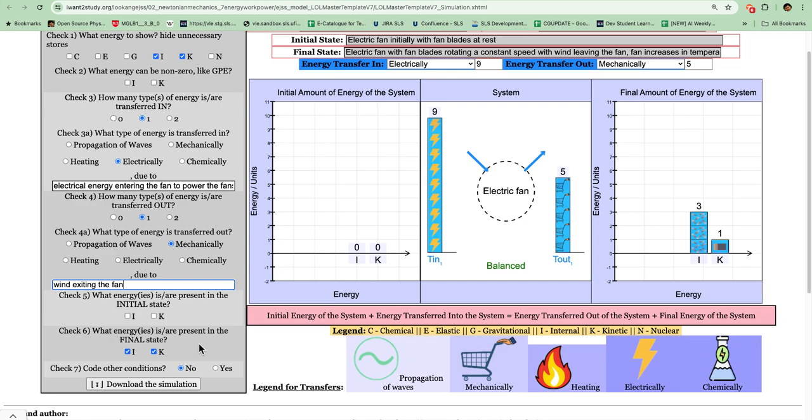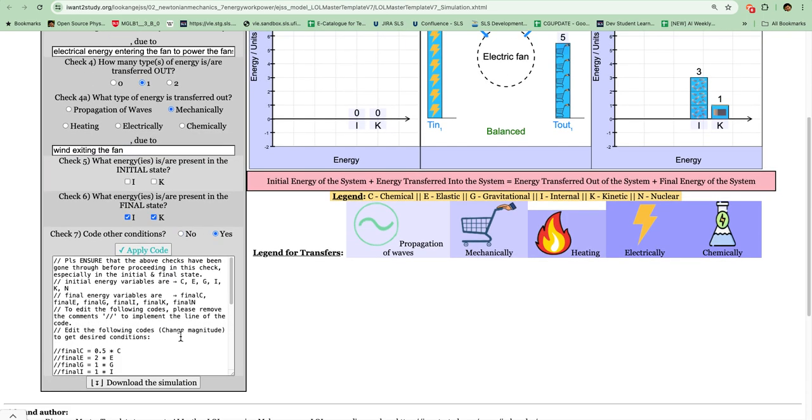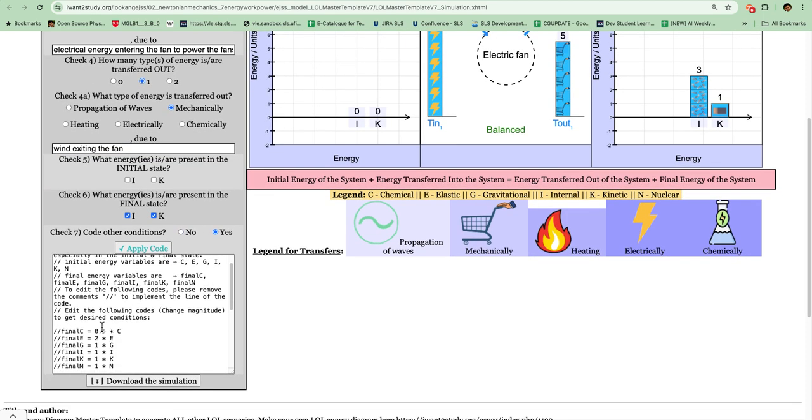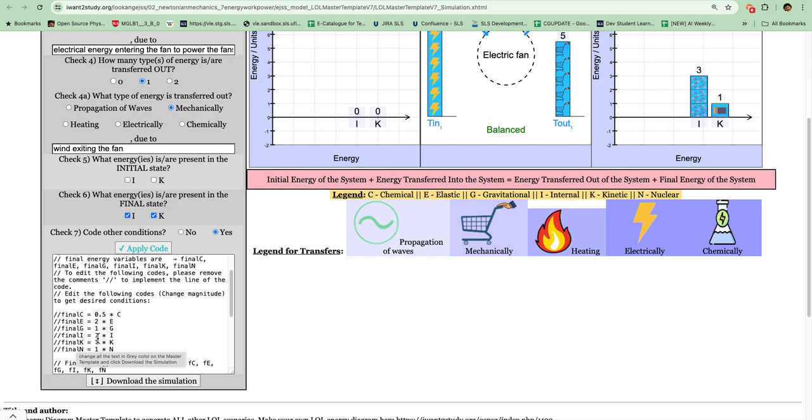Now this is the more complicated one which is not recommended to be used, but if let's say you need to have more power then you can actually come here. For example, if you want internal store, let's say you have a scenario where the internal store of the final is half of the initial state, then you just change here.